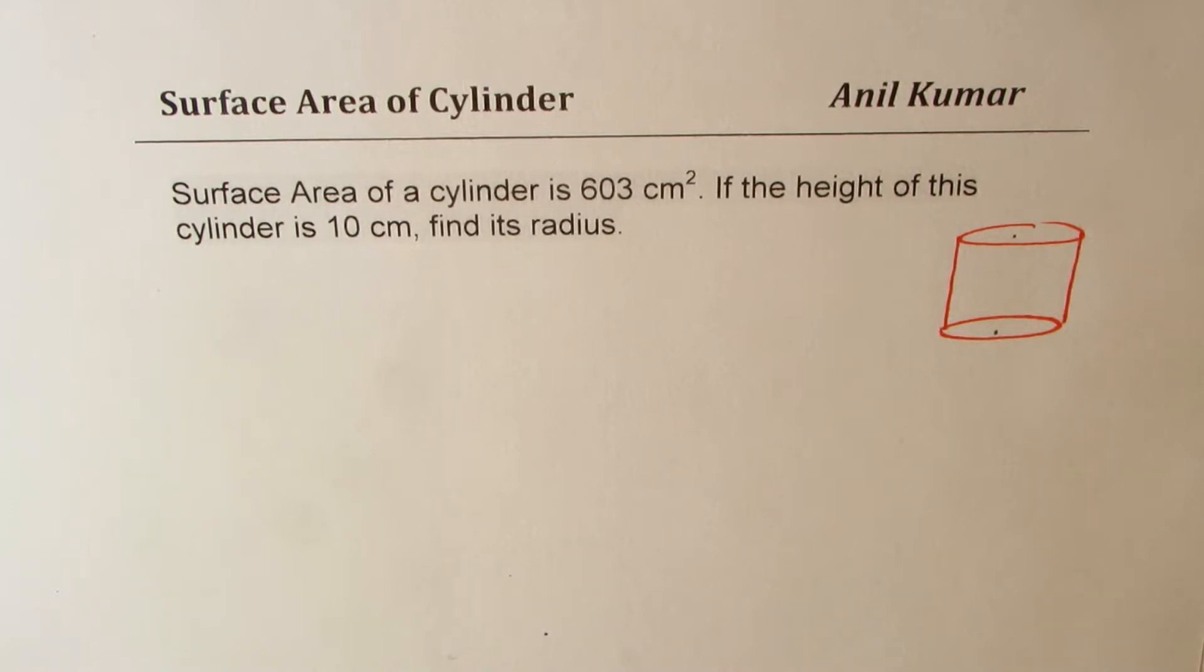The question here is: surface area of a cylinder is 603 cm². If the height of the cylinder is 10 cm, find its radius.